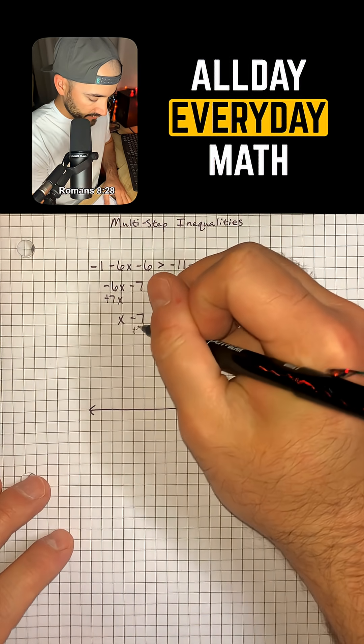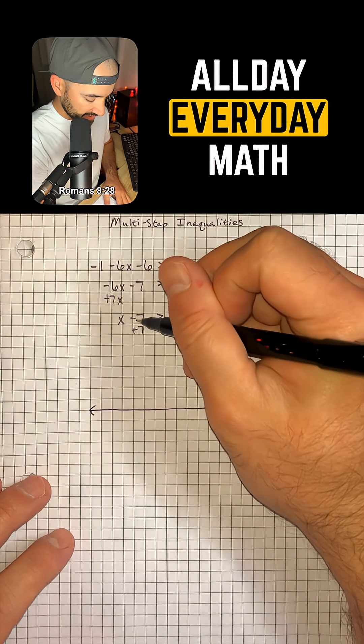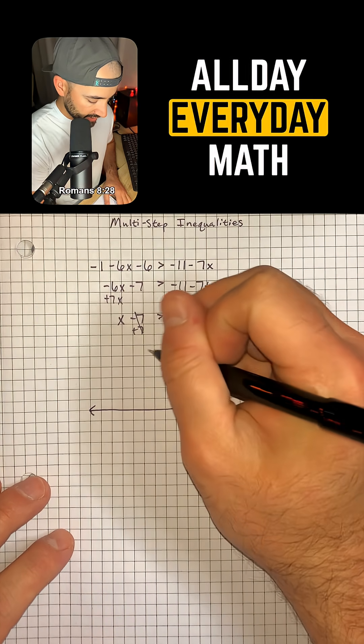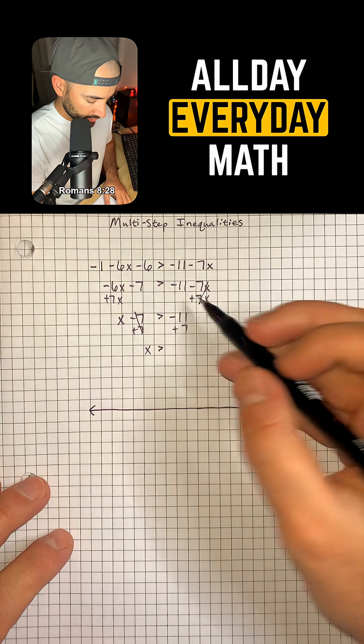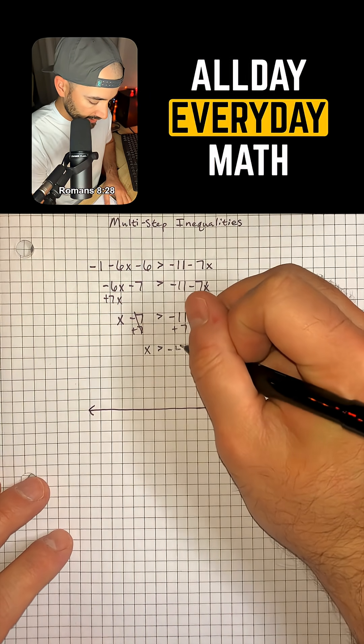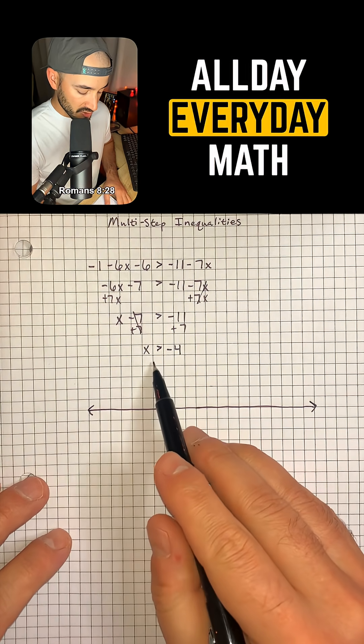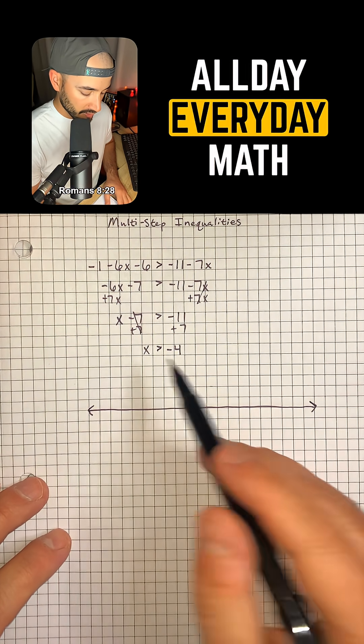And so now we can add 7 to both sides to cancel out the minus 7 and have x is greater than negative 11 plus 7, which is negative 4. So our solution is x is greater than negative 4.